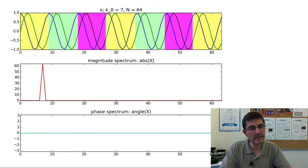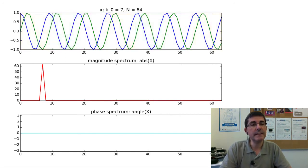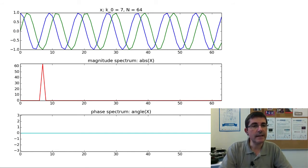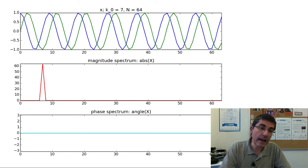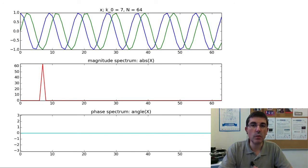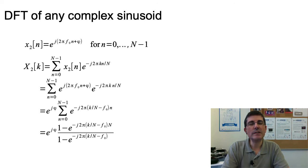When we compute the DFT, we see the magnitude and the phase. The phase is a little bit messy, so let's focus on the magnitude — we see clearly the value of 64 at one location, which is at k equals 7, and the rest of the values are 0. However, this is a very special case in which the complex sinusoid is one of the basis functions of the DFT. This never happens when dealing with real signals, so let's see a more realistic example.